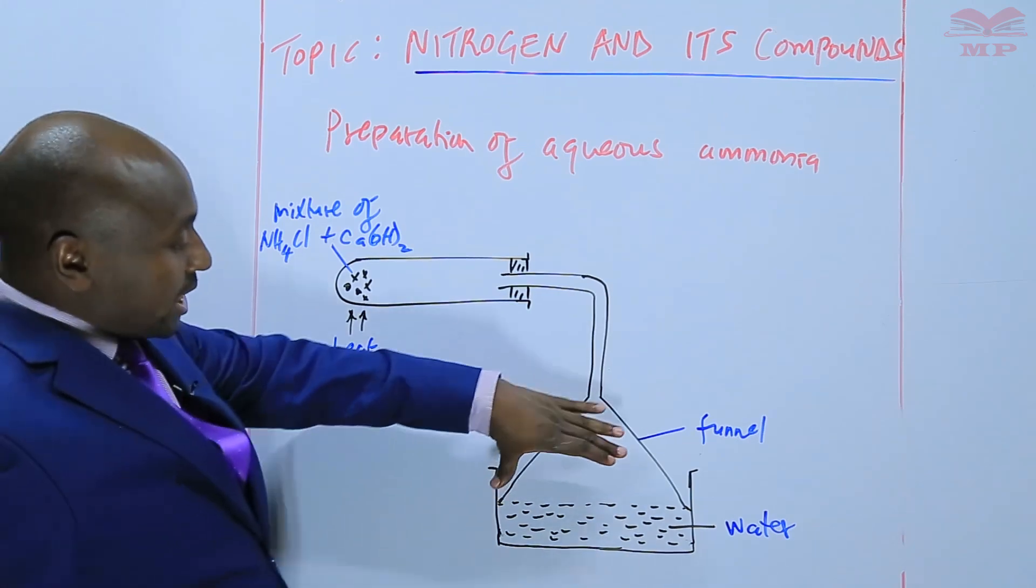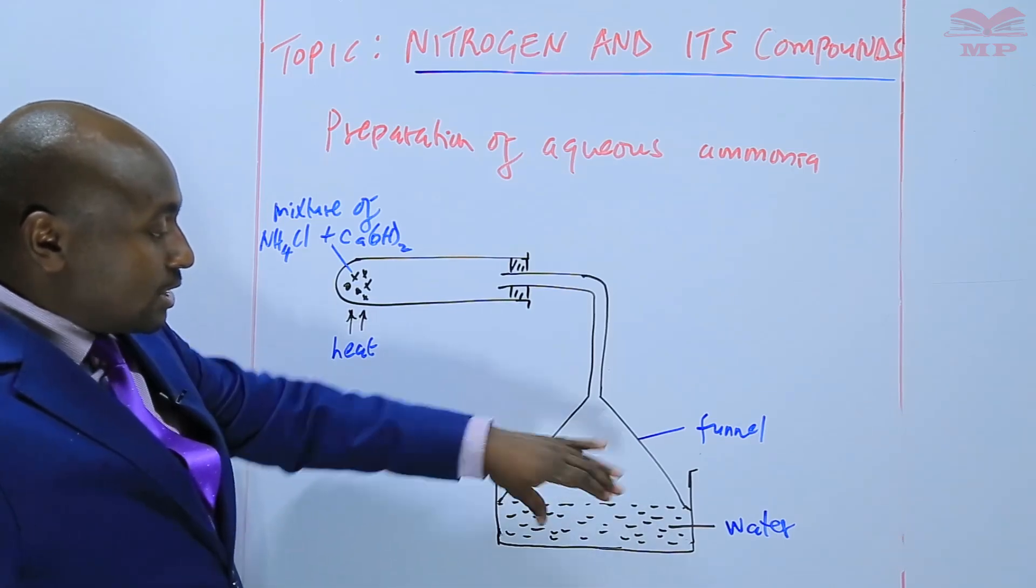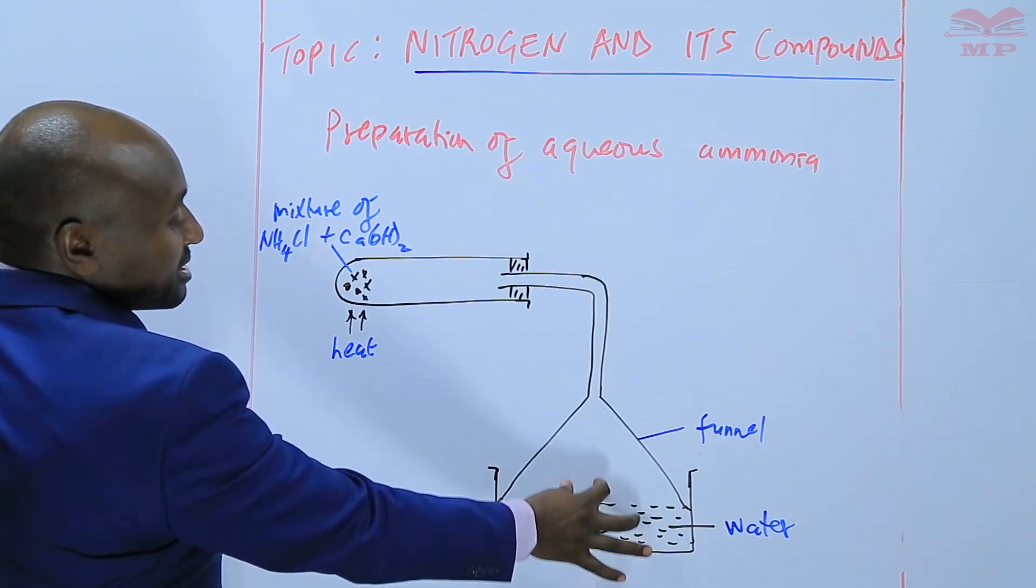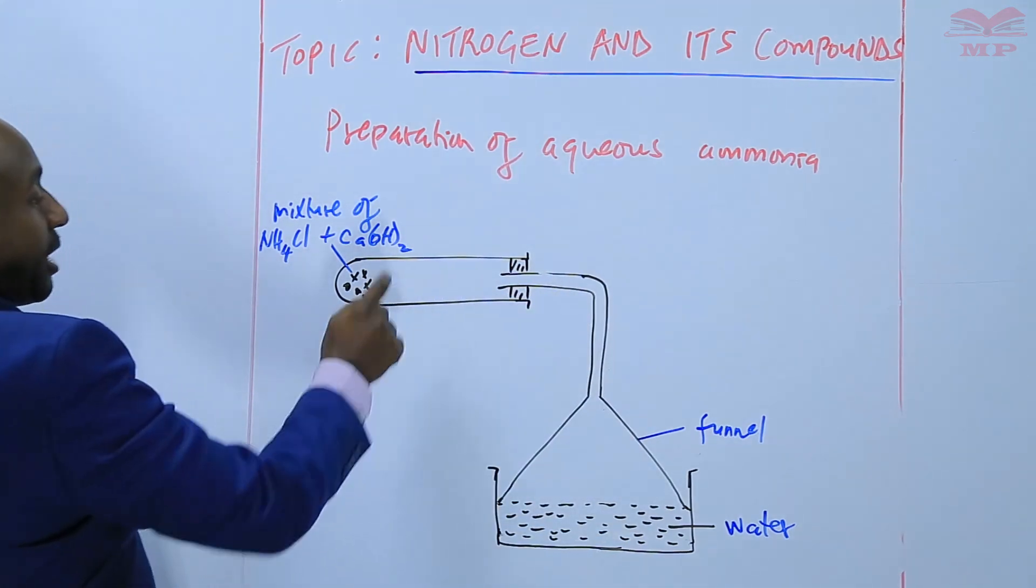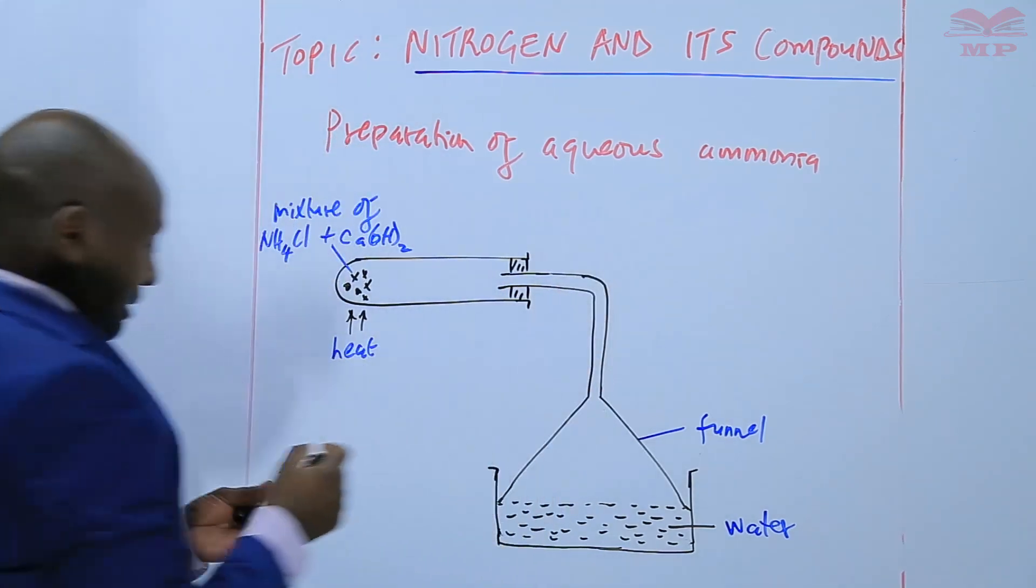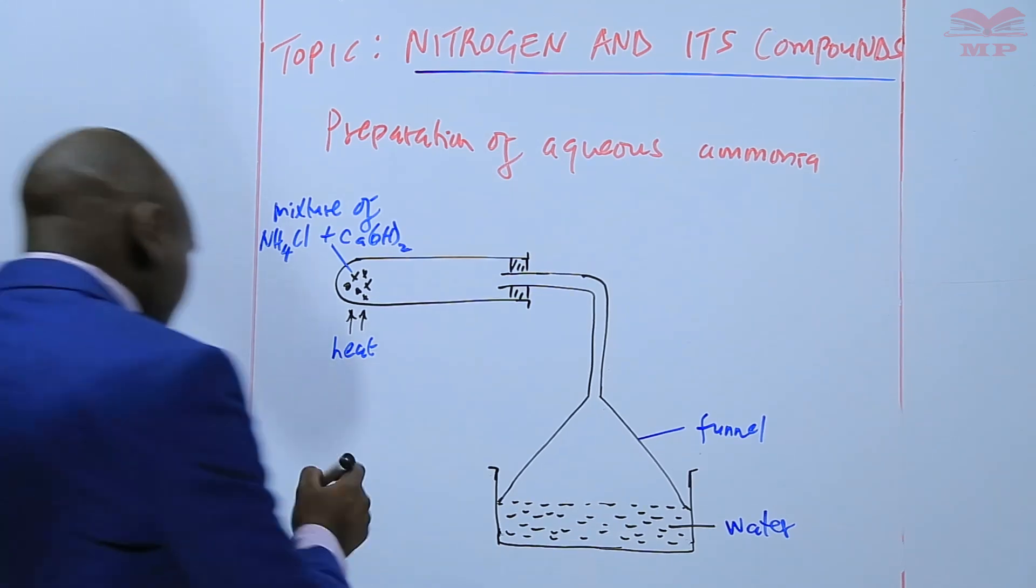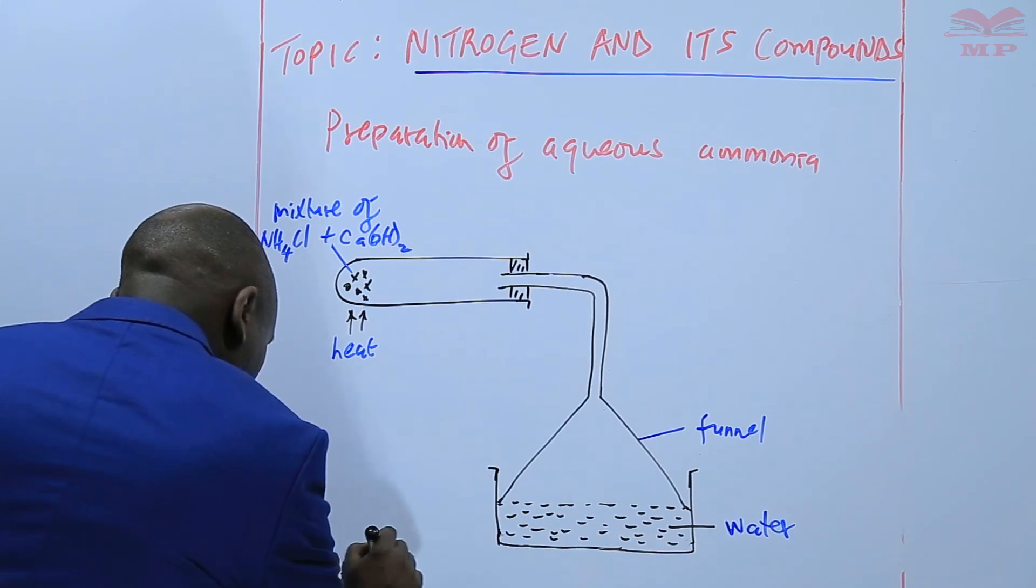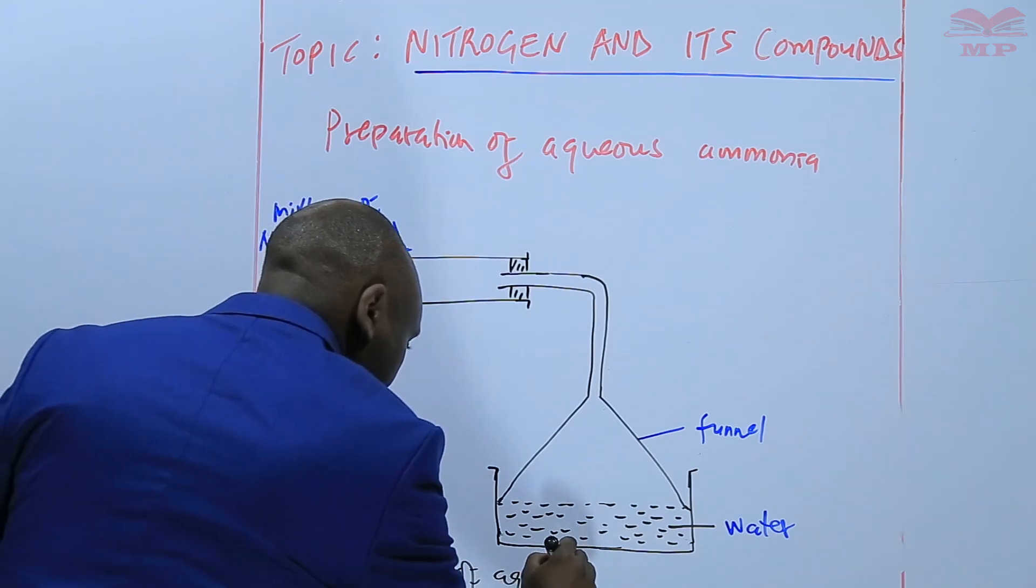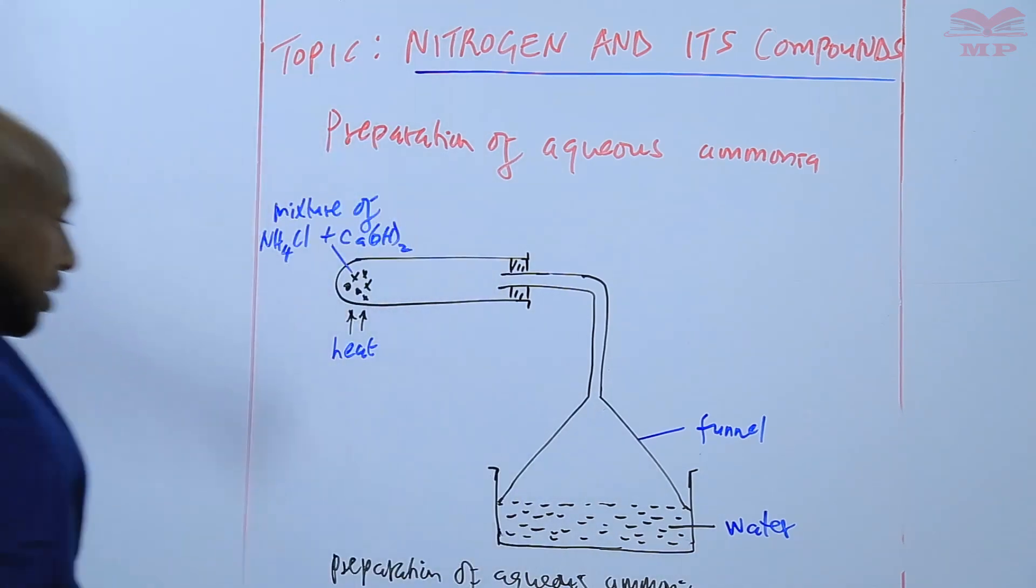Also, the funnel should just be placed near the surface of the water. Just a few centimeters into the water to prevent the sucking back of the water. Because this water can be sucked, all of it, into the combustion area, which would make the hot apparatus to break or to crack. So this is how preparation of aqueous ammonia is done. What we refer to as the ammonia solution.